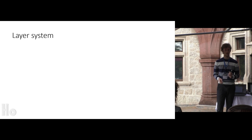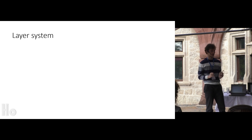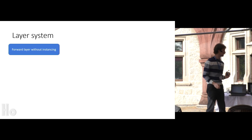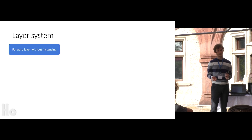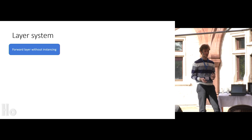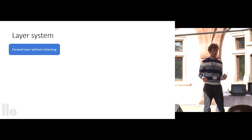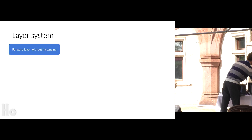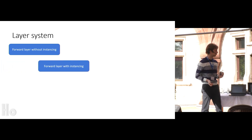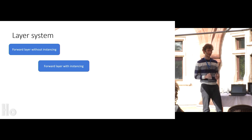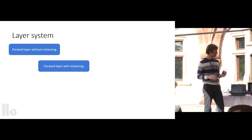The layer system — what is this exactly? Let's imagine you want to create a complex scene with a lot of things. First you want to have a skybox, so you could use a forward layer without instancing, since it's quite easy to calculate a skybox — you only need to sample from a cube texture, and no instancing because there's only one skybox at a time. You also want to add other objects into the scene that share the same geometry and material but have a very simple shading model, so you can use a forward layer with instancing.